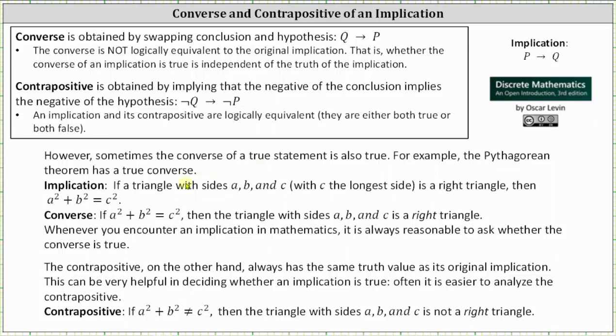Beginning with the implication if a triangle with sides a, b, and c with c being the longest side is a right triangle then a squared plus b squared equals c squared. This is a true statement.